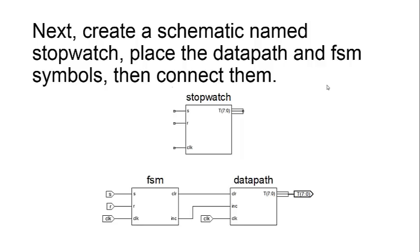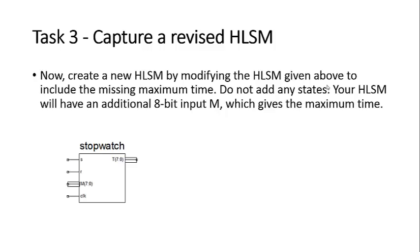Once we have our finite state machine designed and our datapath designed, we can have symbols for both of those. We can use those symbols in a stopwatch or a top-level schematic. Create that, and that basically takes you through the first part of the lab.